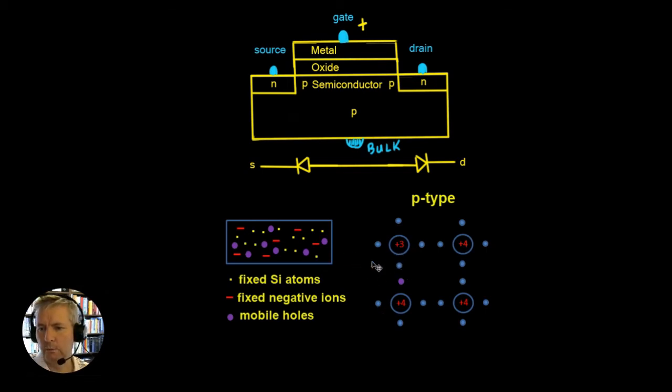So this electron here would now jump into this position here. And what we would end up with here is a fixed negative ion. So we would end up with a layer of these fixed negative ions along this channel here.